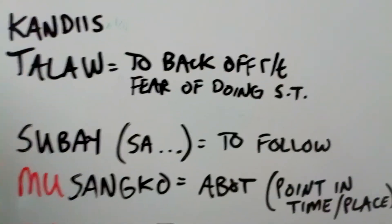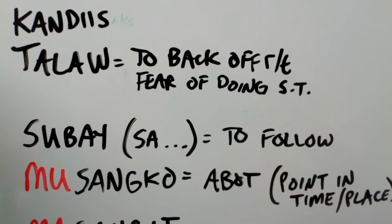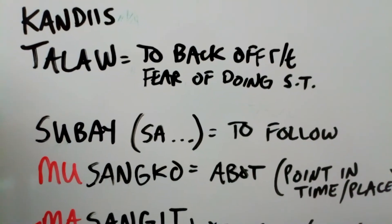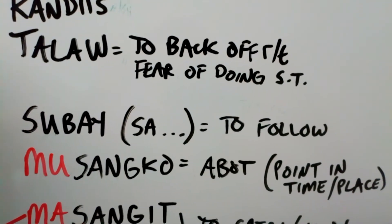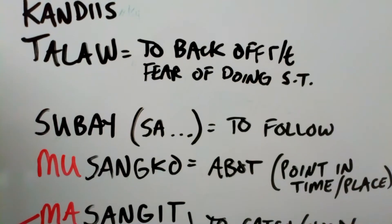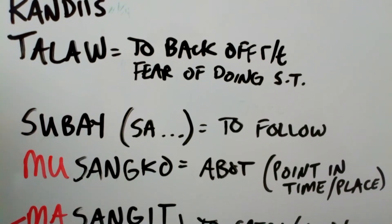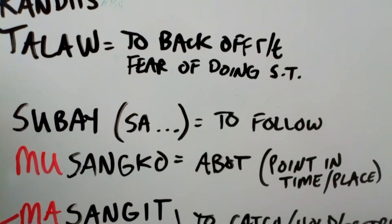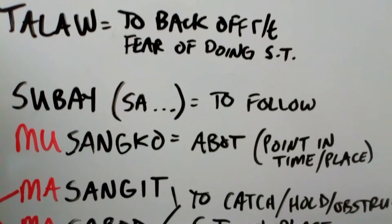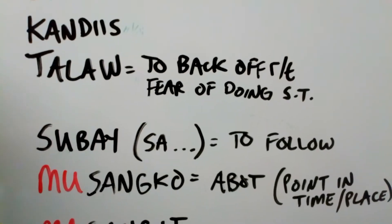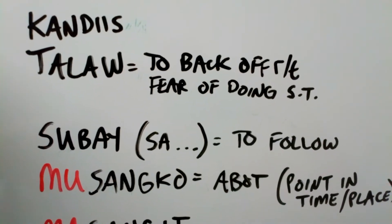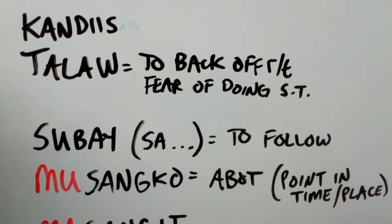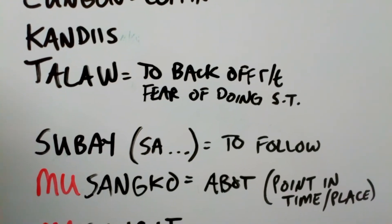Subayon or subaysa — subayon is to follow. So maybe somebody is chanting something or chanting a prayer, and the lead person can say subay kanako — follow with me, follow along. Or like you can watch ants that are in an aligned line doing something in a certain way — they're following each other. The ants are following. Subay.